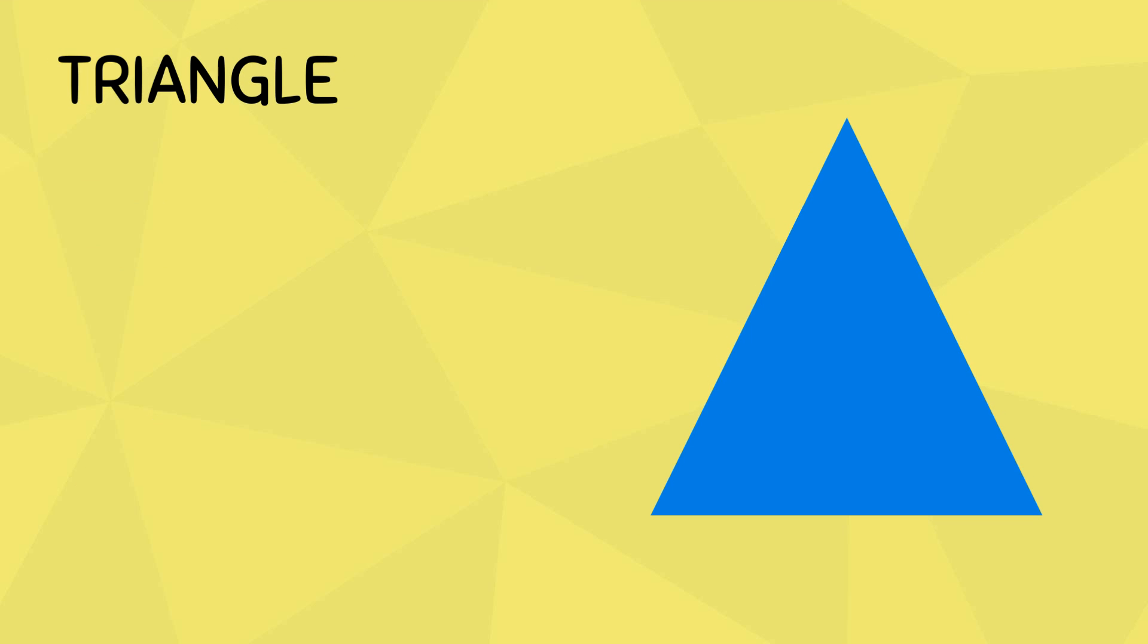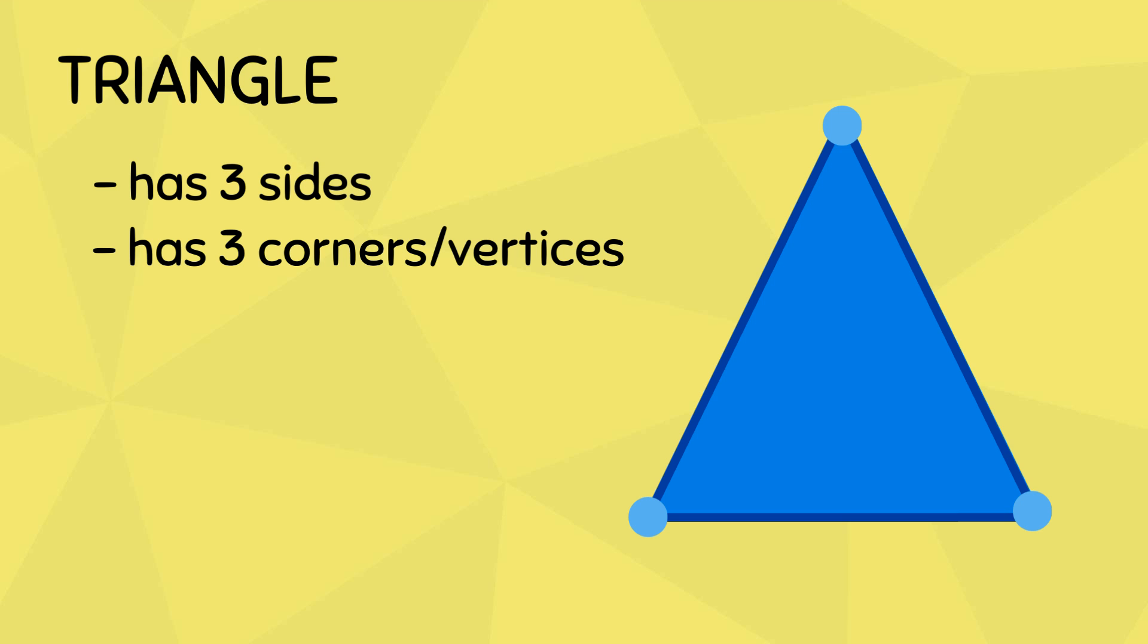called a triangle. A triangle has three sides and three corners. These corners in math are called vertices. It's where